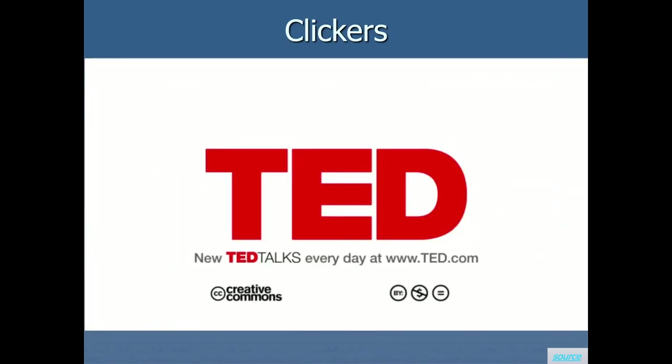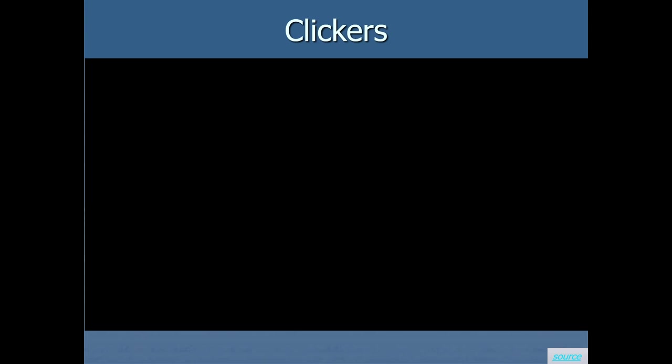That's a pretty cool example of using applied behavior analysis to solve real-world tasks that help people. Throughout the TED Talk, clickers were used as conditioned reinforcers to train rats — and once trained, to give them an immediate signal meaning 'you did the right thing, you're about to get your food reward.'